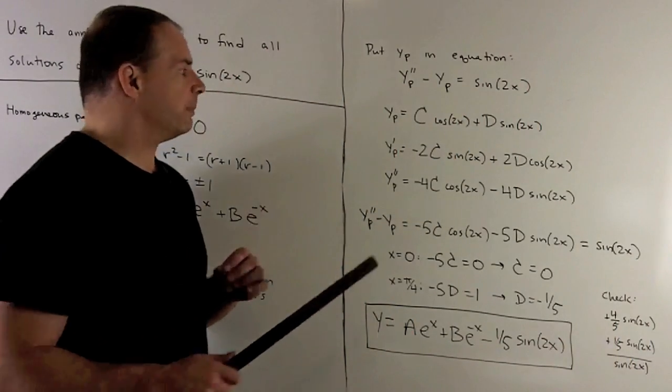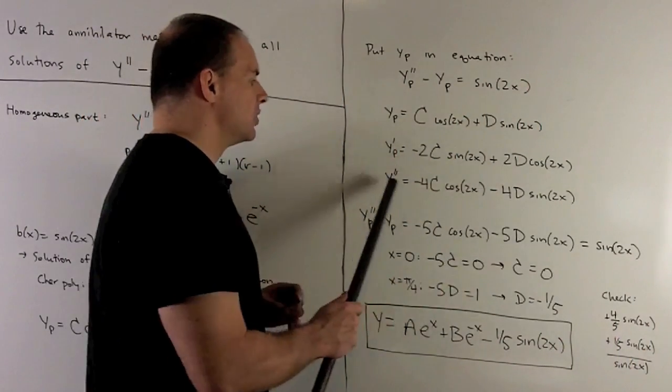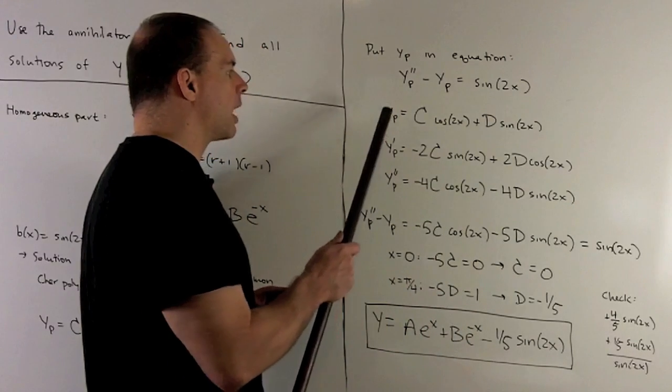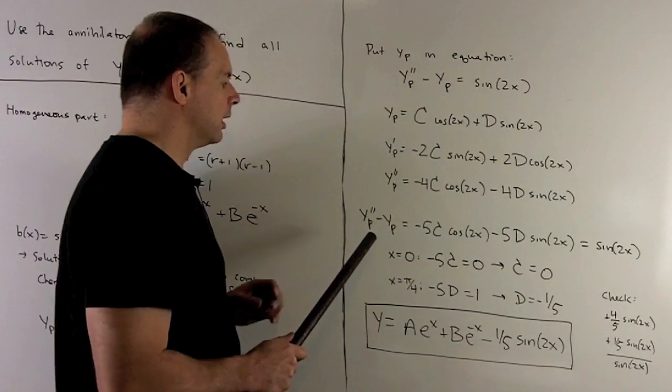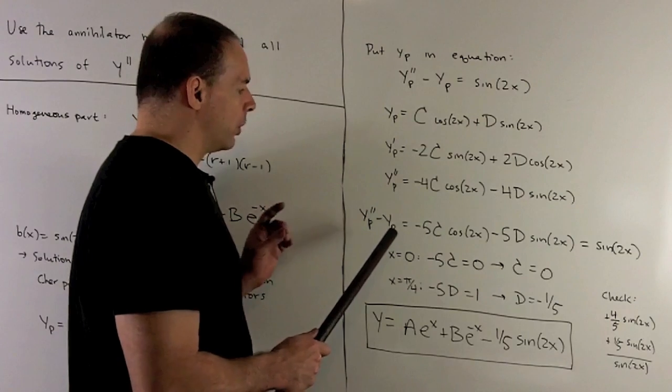Now, we proceed, so we'll take first derivative, second derivative, and then take the difference of y double prime and y. What comes out?